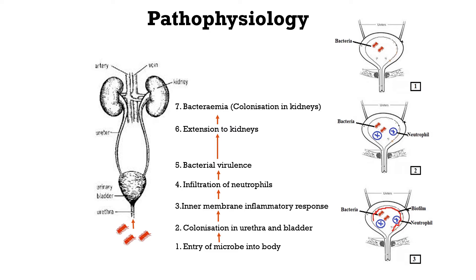In other words, bacteria enter the urethra, then there is multiplication of bacteria. Neutrophil production and infiltration lead to a biofilm, where microbes adhere to the membrane. This causes more and more multiplication, and the infection increases.